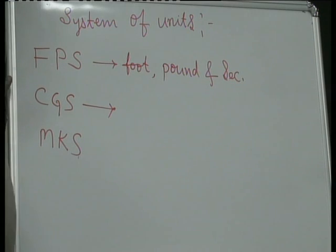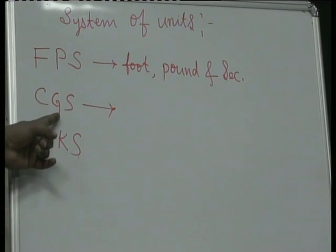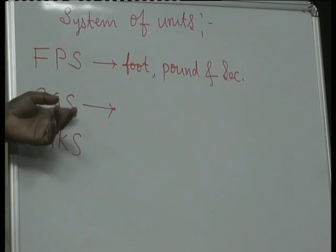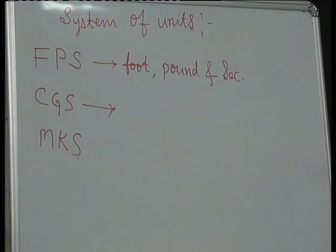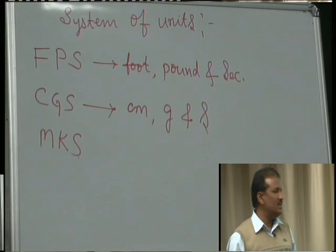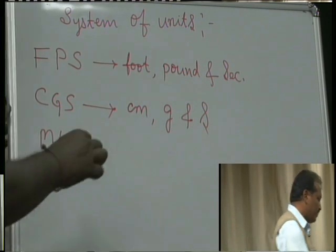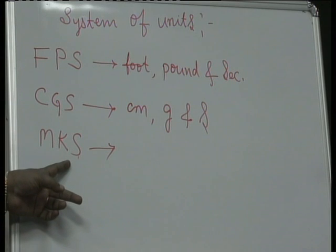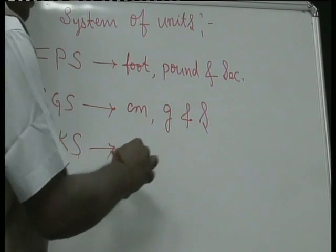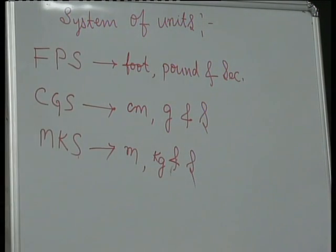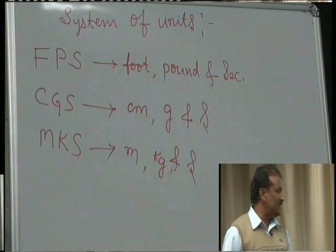Coming to the MKS system: MKS stands for meter, kilogram, and second. Meter is used to measure length, kilogram is used to measure mass, and second is used to measure time. According to MKS, meter, kilogram, and second are the units used to measure the fundamental quantities length, mass, and time respectively.